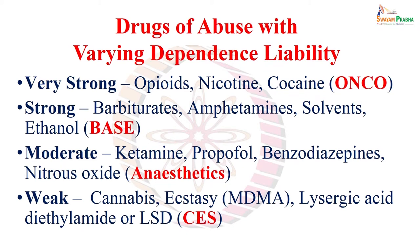You can remember this list through a small mnemonic: 'ONCO BASE ANESTHETICS SAYS.' ONCO stands for Opioids, Nicotine, and COcaine — strong dependence liability. BASE stands for Barbiturates, Amphetamines, Solvents, and Ethanol — also strong dependence liability. ANESTHETICS refers to moderate agents: the intravenous anesthetics ketamine and propofol, and benzodiazepines and nitrous oxide. SAYS refers to weak dependence liability: Cannabis, MDMA (STAC), and LSD — C, S, and L. So: ONCO BASE ANESTHETICS SAYS — drugs of abuse with varying dependence liability.